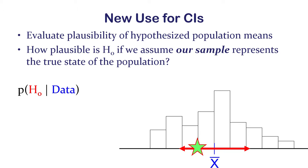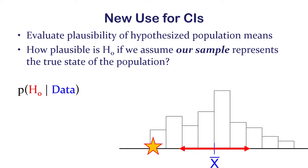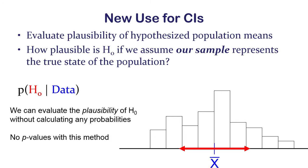If we have a value outside, then that's not believable — not plausible as the true population mean based on what we have from our data, our only evidence so far. So we can evaluate the plausibility of the null hypothesis without actually calculating any probabilities.